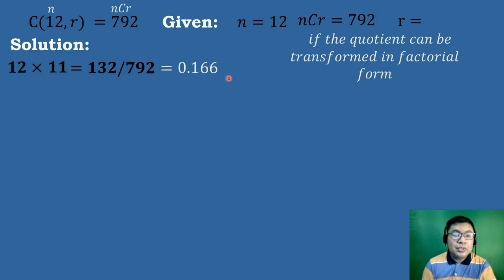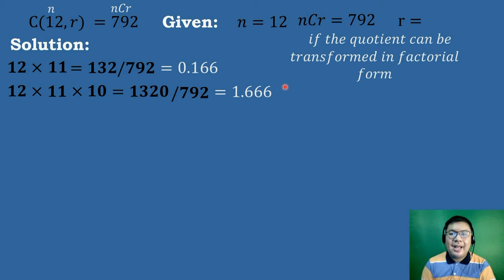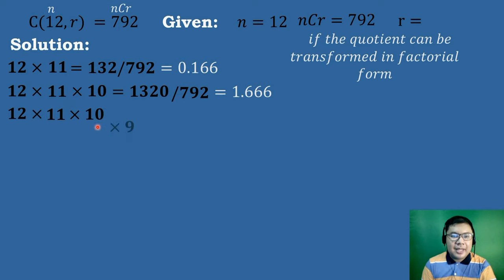Since 0.166 cannot be transformed in factorial form, the next step is to multiply by the next consecutive lower number, which is 10. So 12 times 11 times 10 equals 1,320. Dividing by 792 gives 1.666, which again cannot be transformed in factorial form. So we multiply by 9: 12 times 11 times 10 times 9 equals 11,880. Dividing by 792 gives 15.